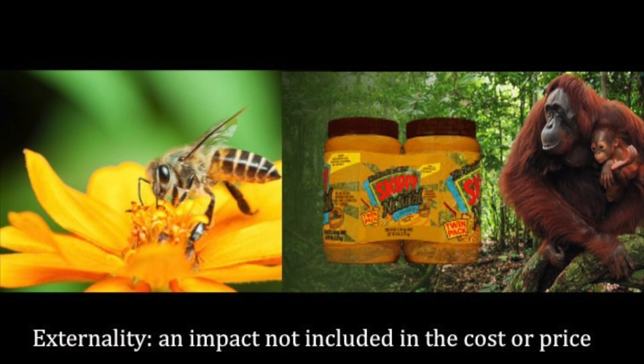Companies sell products that we demand and in doing so maximize profits, which is revenue minus expenses. As a result of producing or consuming these products there are many positive and negative impacts called externalities. An externality is an impact on people or the planet that is not included in the cost or the price of the product. Positive externalities might be things such as parks, education, police and fire protection, or a bee meant for honey production which pollinates a nearby crop. Negative externalities include pollution, disease, climate change, or the extinction of a species. There are all sorts of negative social and environmental externalities.